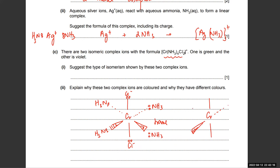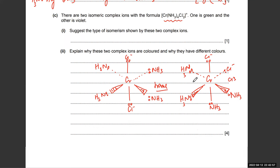The other version is also octahedral. The Cl⁻ ligands make an angle of 90 degrees to each other — they're right next to each other rather than opposite. The NH3 lone pairs are situated around them — that's your cis isomer. The type of isomerism shown is cis-trans isomerism.